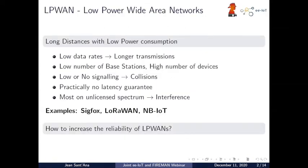We say LPWAN — that's the short for low-power wide area networks. If I would describe them in only one sentence, I would say: long distance with low power consumption. These networks work in very low data rates, which enables them to achieve longer distances, and with low data rates we're talking about longer transmissions. Also, a low number of base stations cover a wide area with a high number of devices.